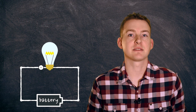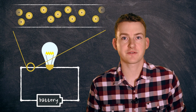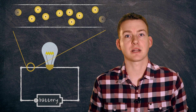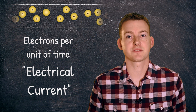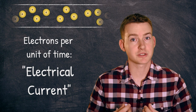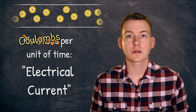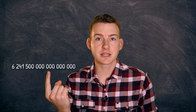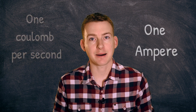Electricity is the flow of electrons, and the number of electrons flowing in any unit of time is known as the electrical current. It's not very convenient to talk about the number of electrons because they are so small and there are so many of them flowing. Instead, we talk about coulombs. One coulomb is this many electrons. One coulomb per second is known as one ampere, often shortened to amps.